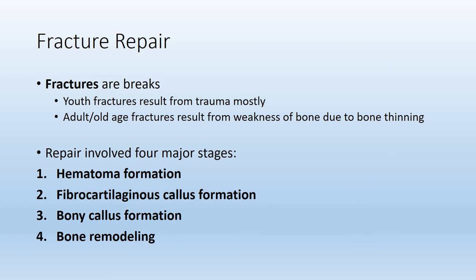Now we'll talk about fracture repair and a couple of bone disorders. Anytime there's a fracture, there is a break — incomplete or complete. In children or young adults, fractures come from trauma; in older adults, fractures can result from bone weakness or bone thinning. Once you have a fracture, there are four steps in repair: hematoma formation, fibrocartilaginous callus formation, bony callus formation, and bone remodeling. You should know the steps in order and what is happening in each step.